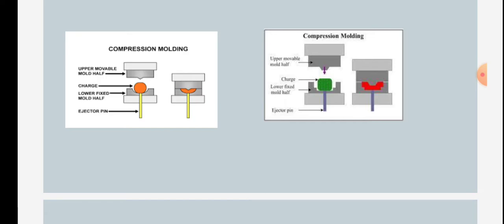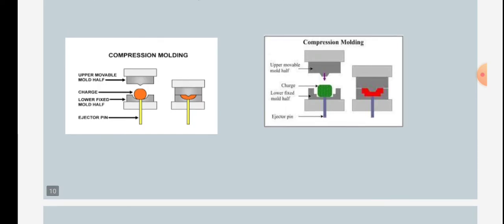These are the figures of compression molding. Also shown in the figure: upper movable mold half, charge, lower fixed mold half, and ejector pin.